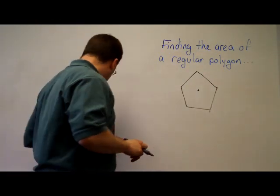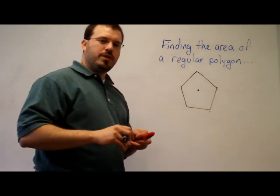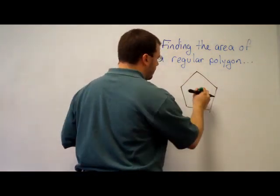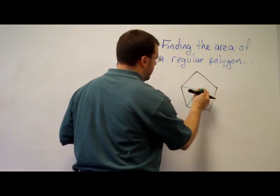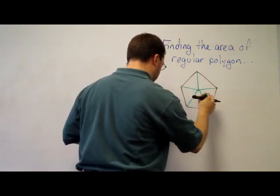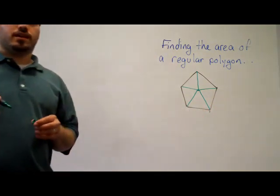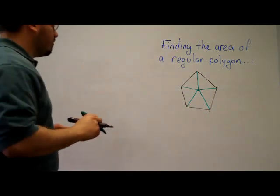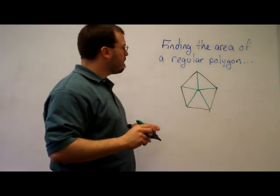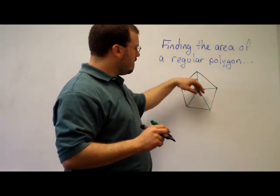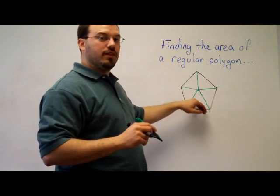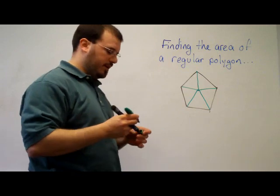The basic idea is when you look at a regular polygon, divide the figure up into isosceles triangles. Now, all of those isosceles triangles would be congruent since it's a regular polygon. If we can find the area of one of these isosceles triangles, then we can find the area of the whole polygon.